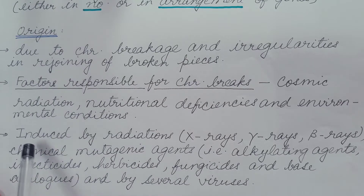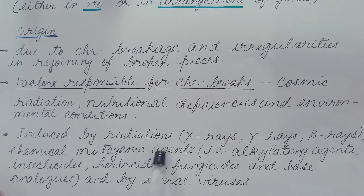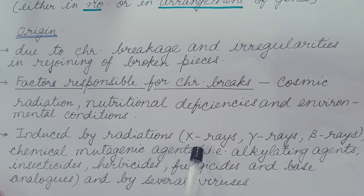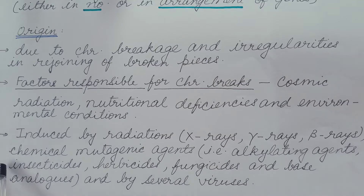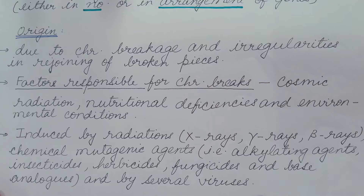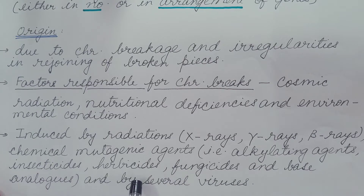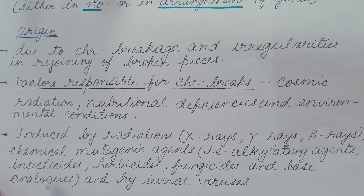Chromosome breaks can also be induced artificially by radiations like X-rays, gamma rays, and beta rays; by chemical mutagenic agents such as alkylating agents, insecticides, herbicides, fungicides, and base analogues; and by several viruses.